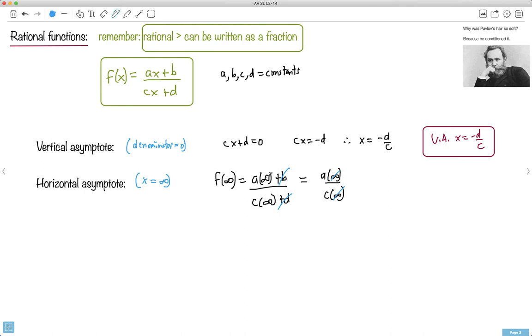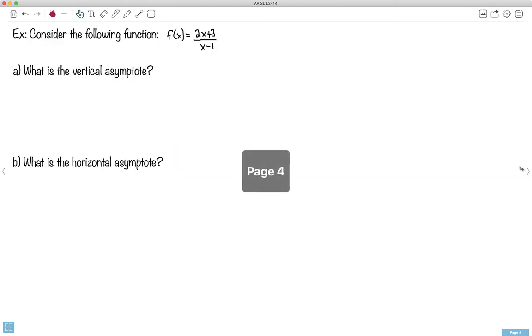So what do we get then? We get that the y value is going to be just a over c. So the horizontal asymptote would just be y equals a over c. I think it's more important to be able to do these on a case-by-case basis instead of trying to memorize something like this. Because you don't get these on your formula booklet. Denominator is 0, x equals infinity. That's actually the only pieces you need.